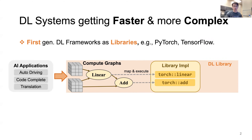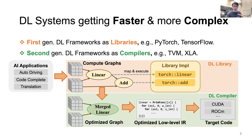Since deep learning models are computationally intensive, deep learning systems are constantly evolving to achieve higher performance, which brings us the second generation of deep learning frameworks — compilation-based deep learning systems such as the well-known tensor compiler TVM. Instead of leveraging pre-compiled general binaries, tensor compilers not only revise a more efficient computation graph at the graph level, but they also use tensor IRs to perform various low-level optimizations, eventually generating high-performance target code.